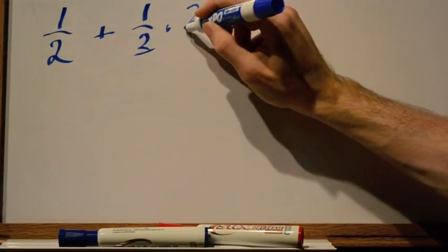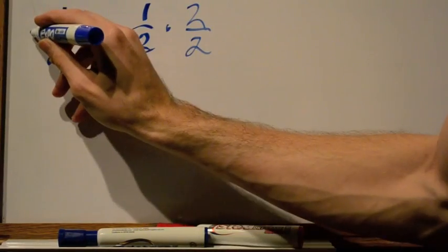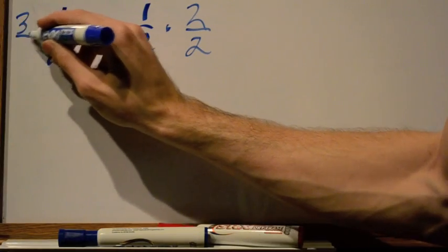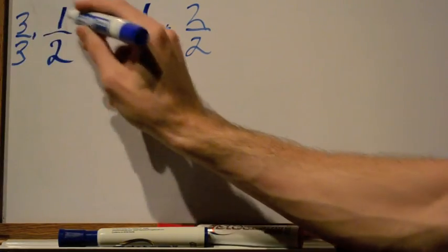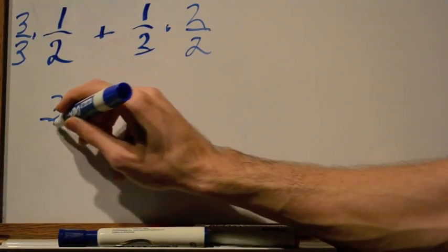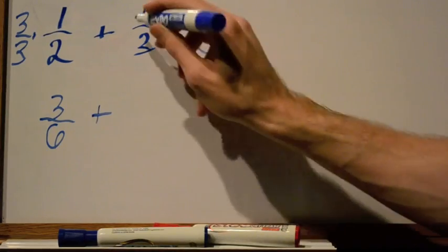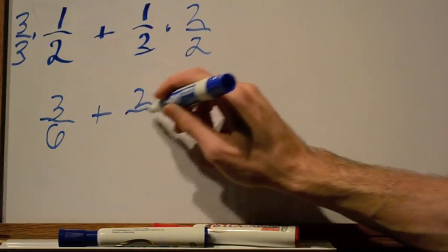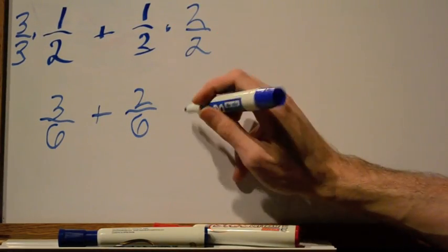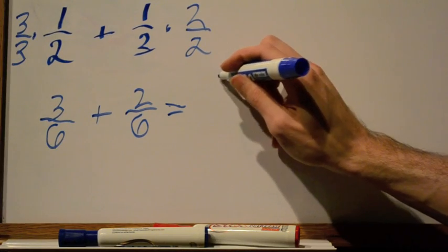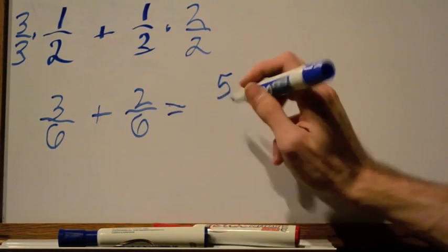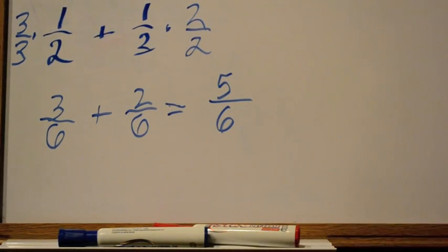We'll multiply this by 2 over 2 and multiply this by 3 over 3. We get 3 times 1 is 3 over 6 plus 1 times 2 is 2 over 3 times 2 is 6, equals 3 plus 2 is 5 over 6. That's the common method.